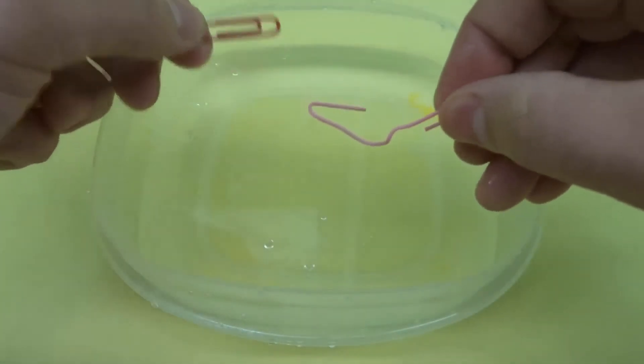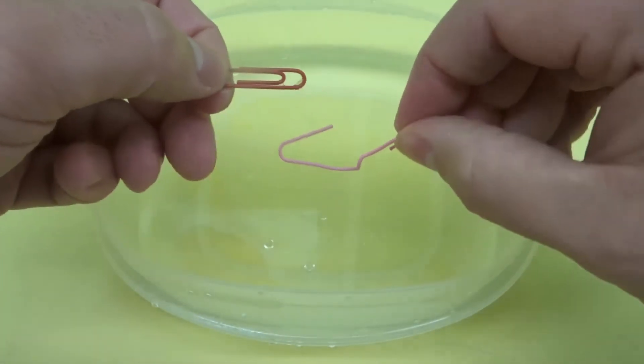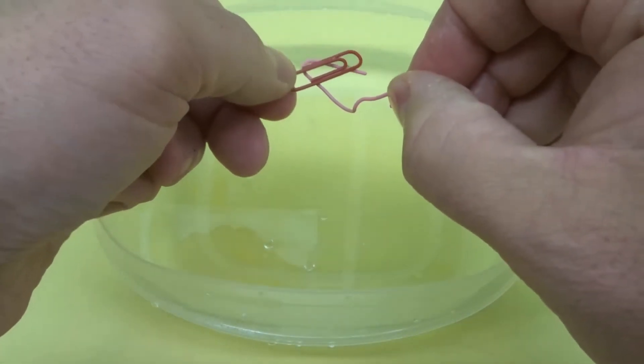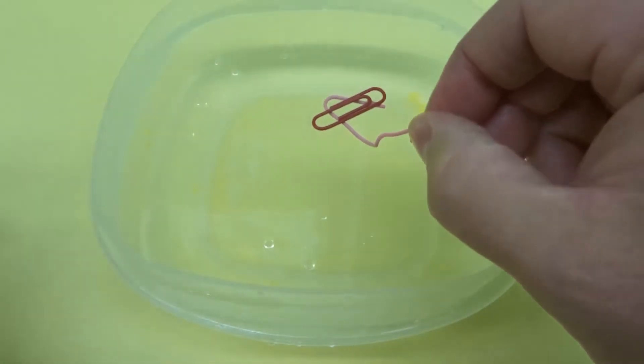So we need to gently place it on the water and what I've done is I've got a different paperclip here. I've spread it out like that so it can be used to lower the paperclip in there. I'm just trying to balance it on there.